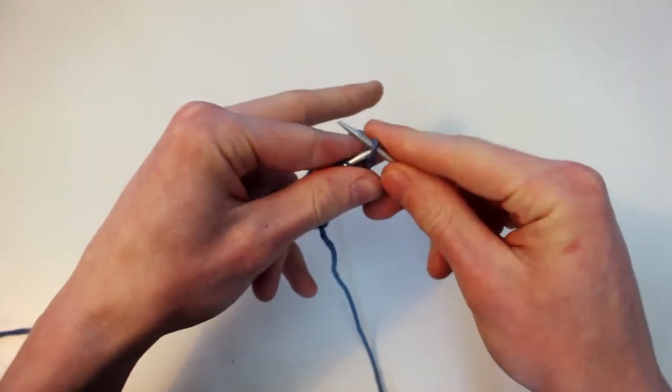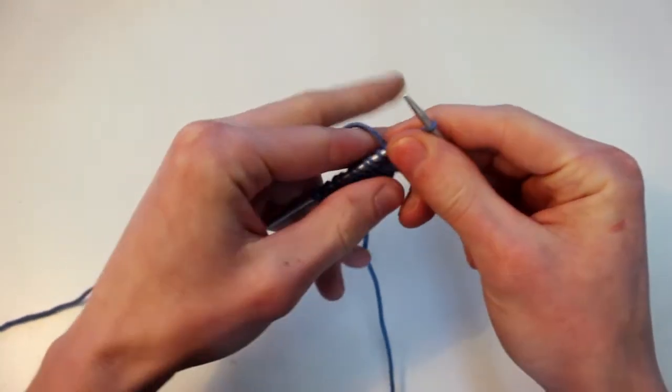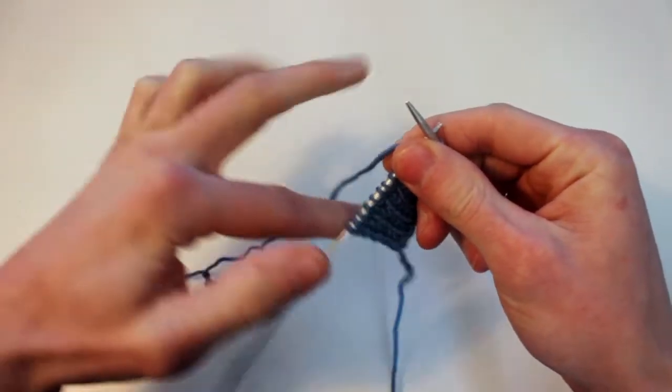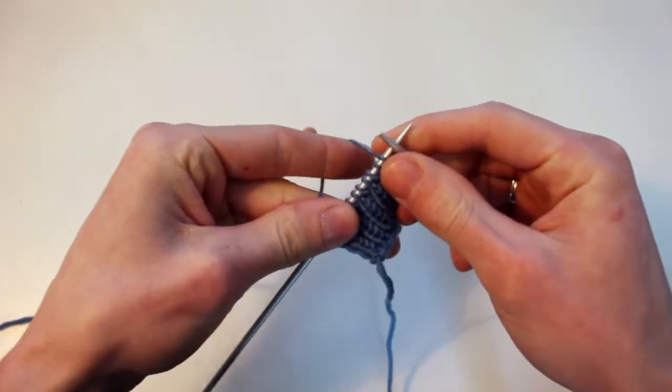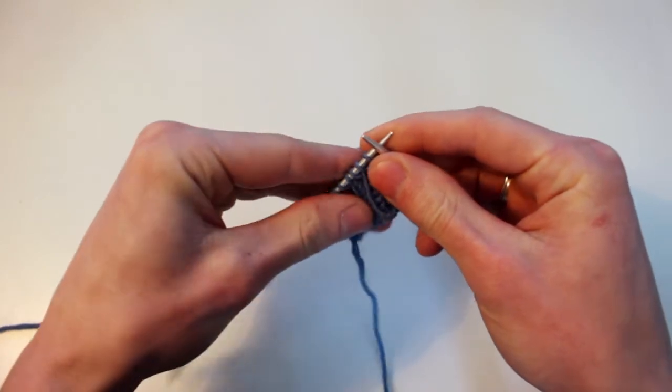So if I only use my index finger you can see there's no resistance and the yarn just gets real loose and there's no way to control it. But if I use my middle finger to pincer it against the left needle.